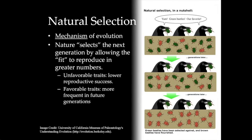What natural selection essentially means is that nature selects the next generation by allowing the most fit to reproduce in greater numbers. So those that had unfavorable traits would have lower reproductive success, whereas those with favorable traits would have those traits appear more frequently in future generations.